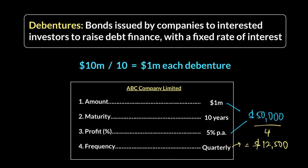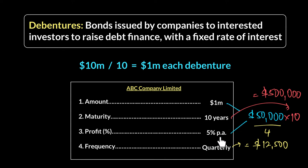If you continue that for 10 years — multiplying $50,000 by 10 — you end up making $500,000 on a $1 million investment. That's a 50% return over 10 years when you invest $1 million at 5% per annum paid out quarterly. So the business raises the amount, keeps paying the interest as profit to investors, and once the 10-year maturity period is done, the entire $1 million is paid back to the investors who gave the company the money 10 years earlier.